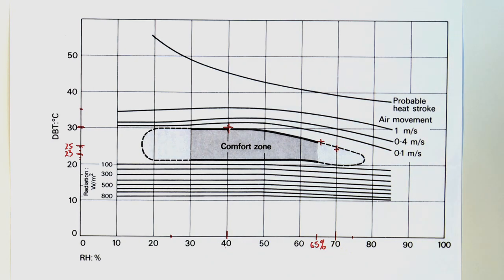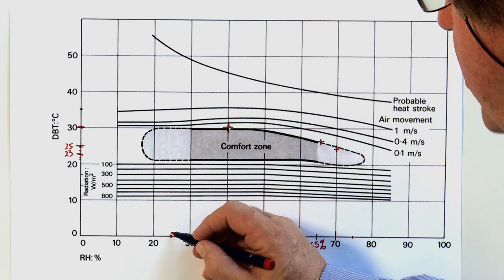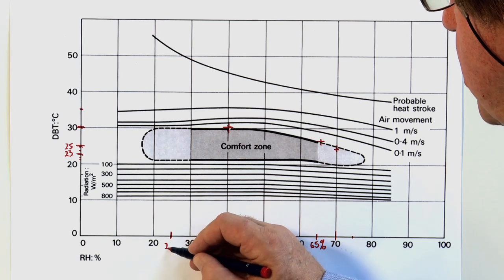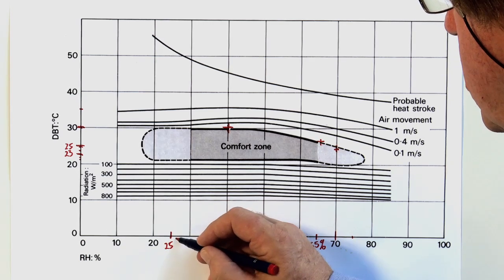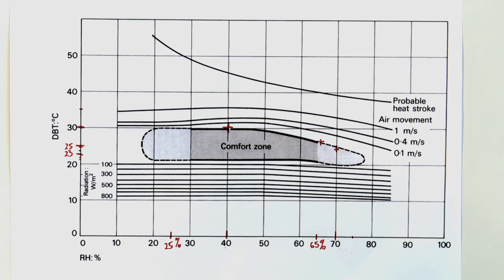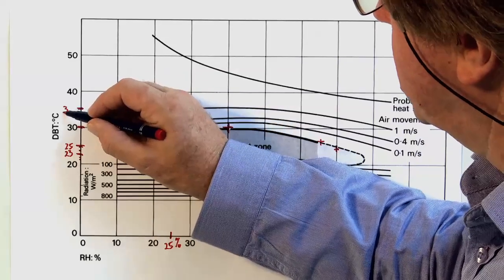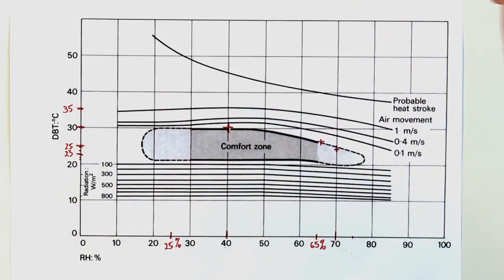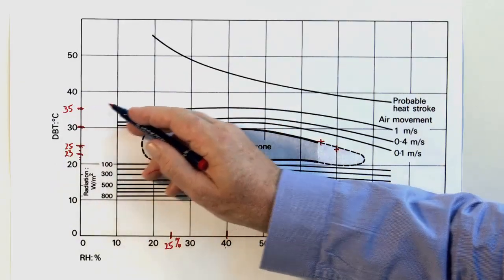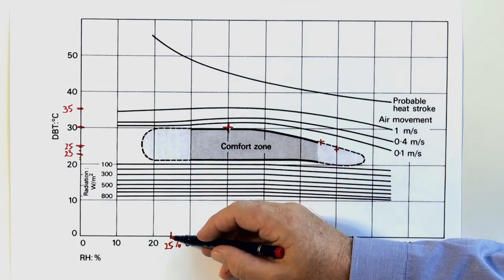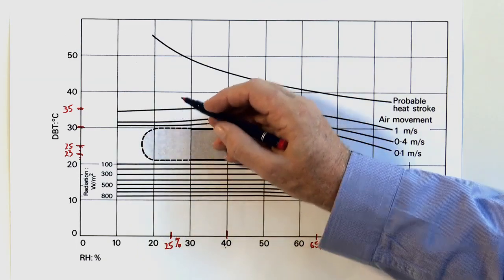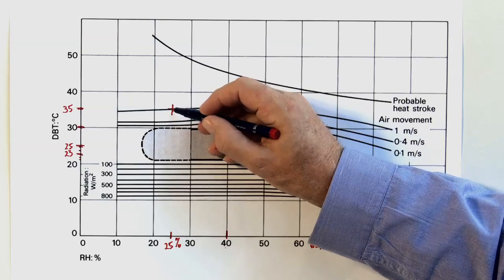Last example we looked at was 25% relative humidity. But in this case we had a dry bulb temperature of 35 degrees. Again plotting across and up we can see that we are out of the comfort zone.